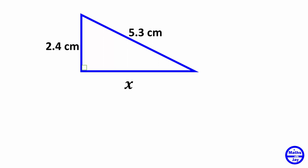So here we're given two sides of a right-angled triangle and we want to find the third side, x. The important thing here is that we know the longest side. So the side x has got to turn out to be shorter than 5.3.